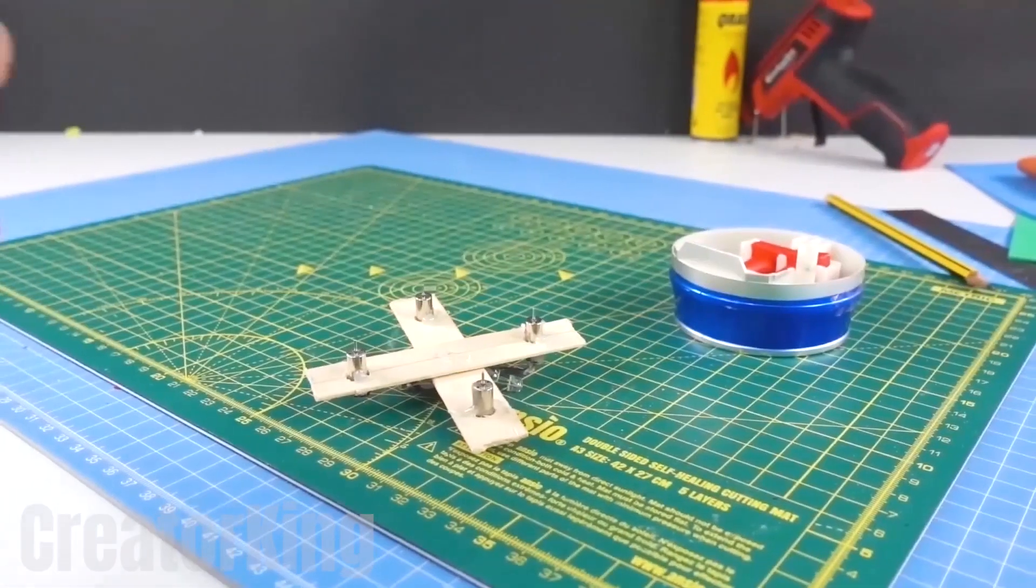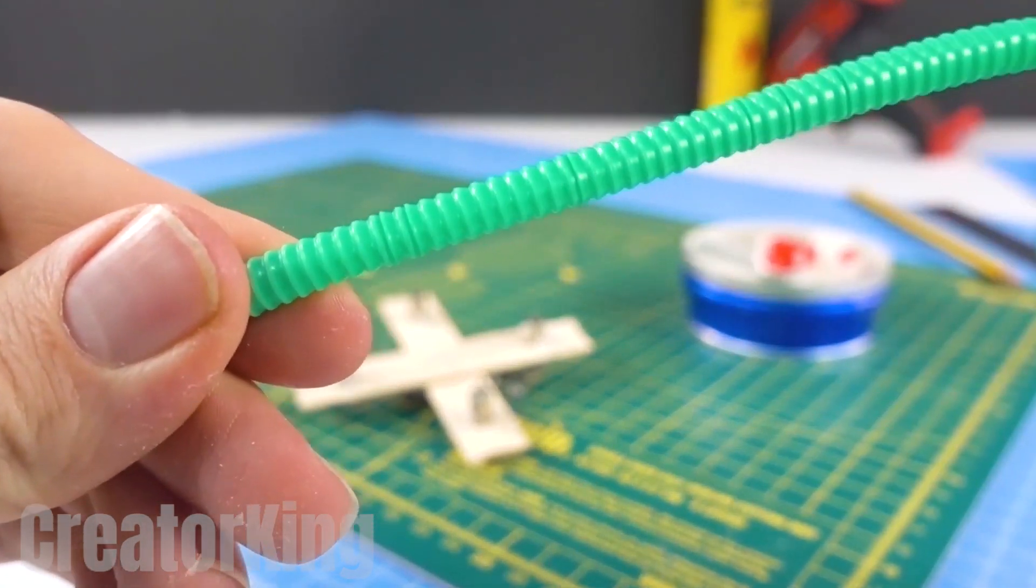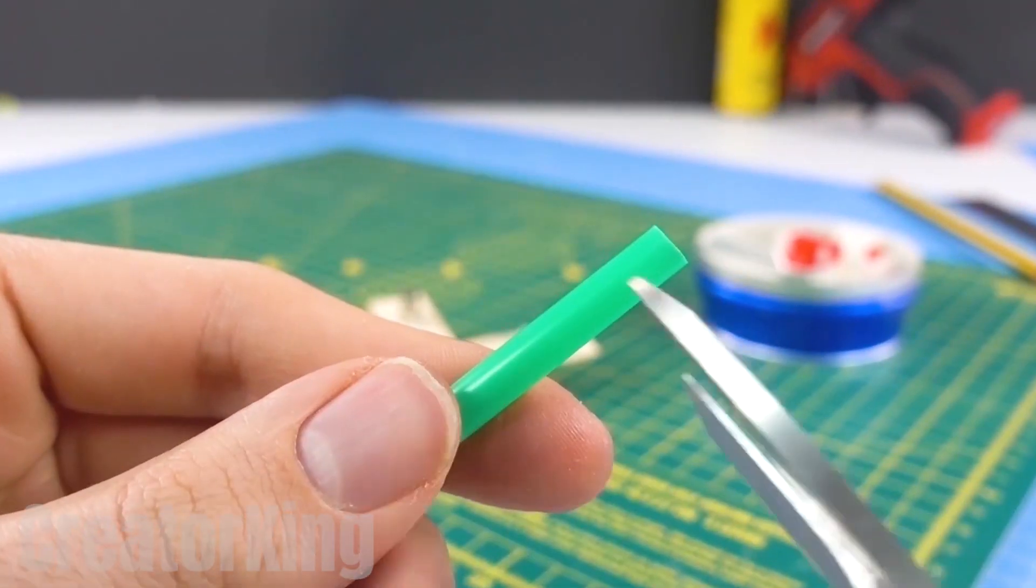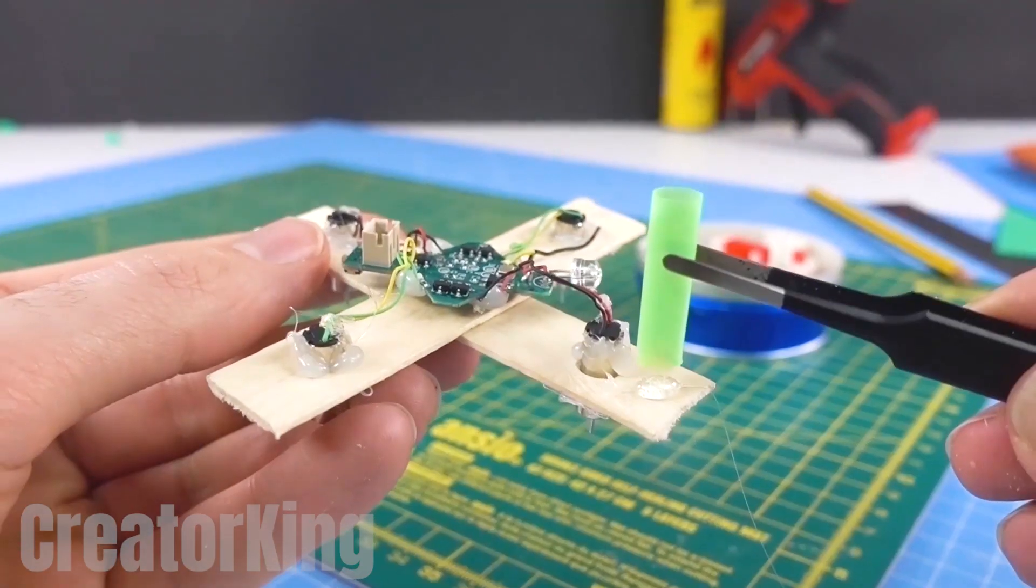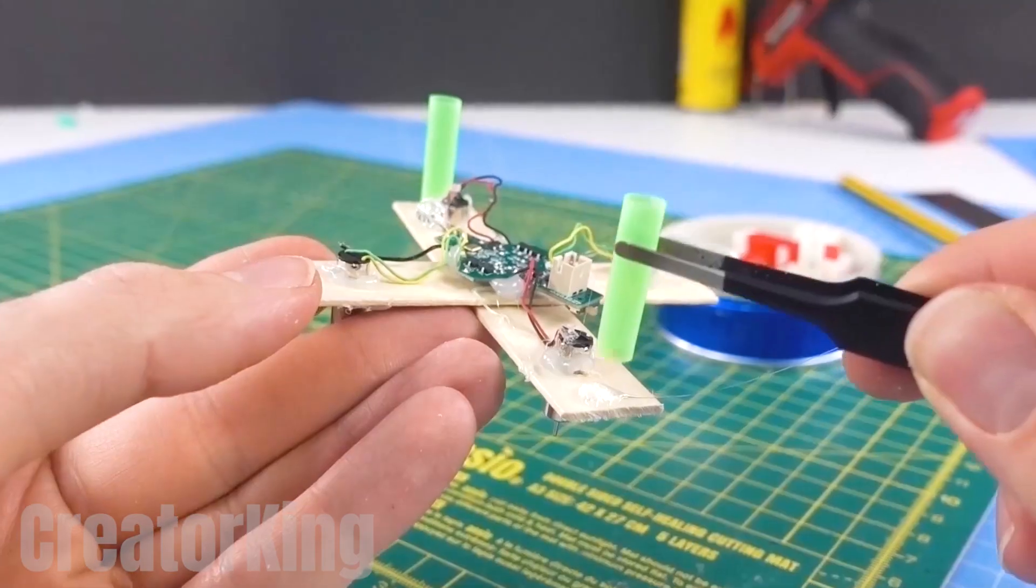Take the straw from your morning smoothie out of the garbage and cut four pieces long enough to separate the cross and the circuit from the ground. Glue each one to the ends of the cross to act as landing legs.